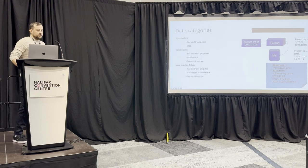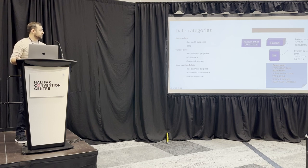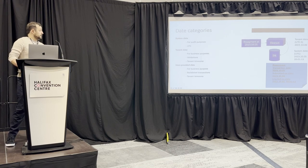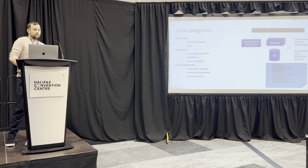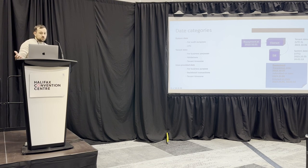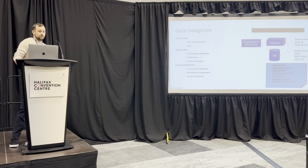Category-wise we have three kinds of dates: the system date, used for audit purposes; the tenant date, used so far for business purposes and validations, defined in the tenant time zone; and the user-provided date. A practical example: if I'm doing a repayment with October 5th, 2023 in Fineract, and the tenant date is set to UTC minus 5, I might be sending a backdated transaction if the actual tenant date was October 6th.